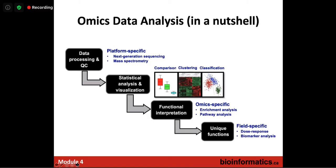All omics share the same data pattern. In a nutshell, everything at a high level is almost identical. Data processing and quality tracking is platform-specific — for example, if you're doing RNA-seq you are dealing with sequencing data and FASTQ files; if you're from NMR, that's a specific data format directly from the machine; mass spec also has a very unique format.